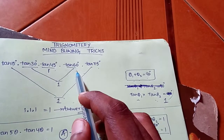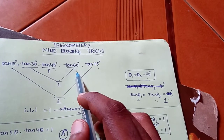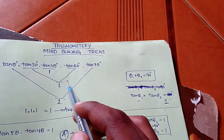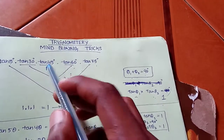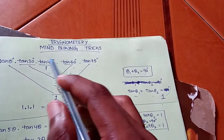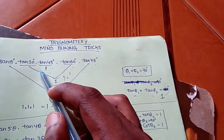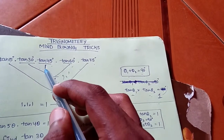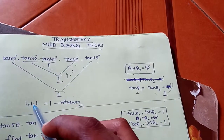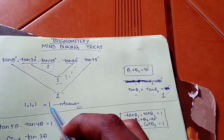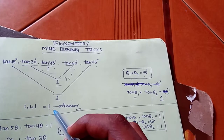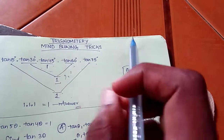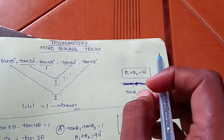Similarly, Tan 30 and Tan 60 sum to 90, so Tan 30 × Tan 60 = 1. Tan 45 = 1. Therefore 1 × 1 × 1 = 1. It is simple to find the answer in 10 seconds.